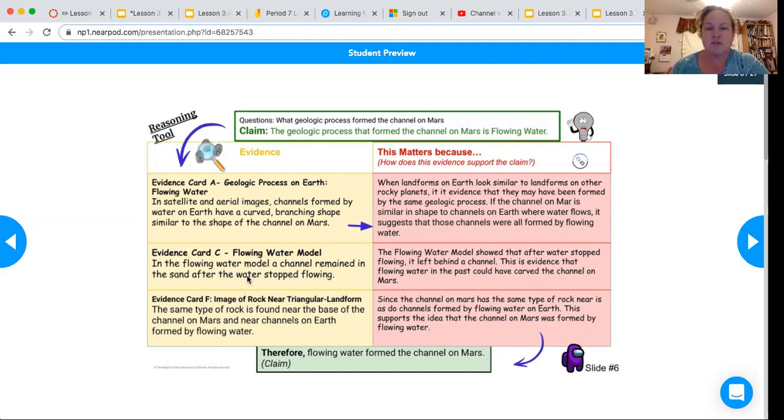In the flowing water model, a channel remained in the sand after the water stopped flowing. This matters because the flowing water model showed that after water stopped flowing, it left behind a channel. So this is evidence that the flowing water in the past could have carved the channel on Mars.